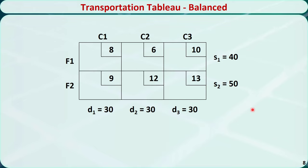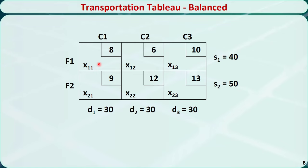This is another representation of the problem using the transportation tableau. These are the supply nodes and these are the demand nodes. The unit shipment cost is put in the top right corner of each cell. For example, from factory 1 to customer 1, the unit shipping cost is $8 per product. We need to determine the amount of products Xij shipped from supply node i to demand node j, and we put the decision variables in the bottom left corner of each cell. For this balanced problem, the total supply is 90 and the total demand is also 90.